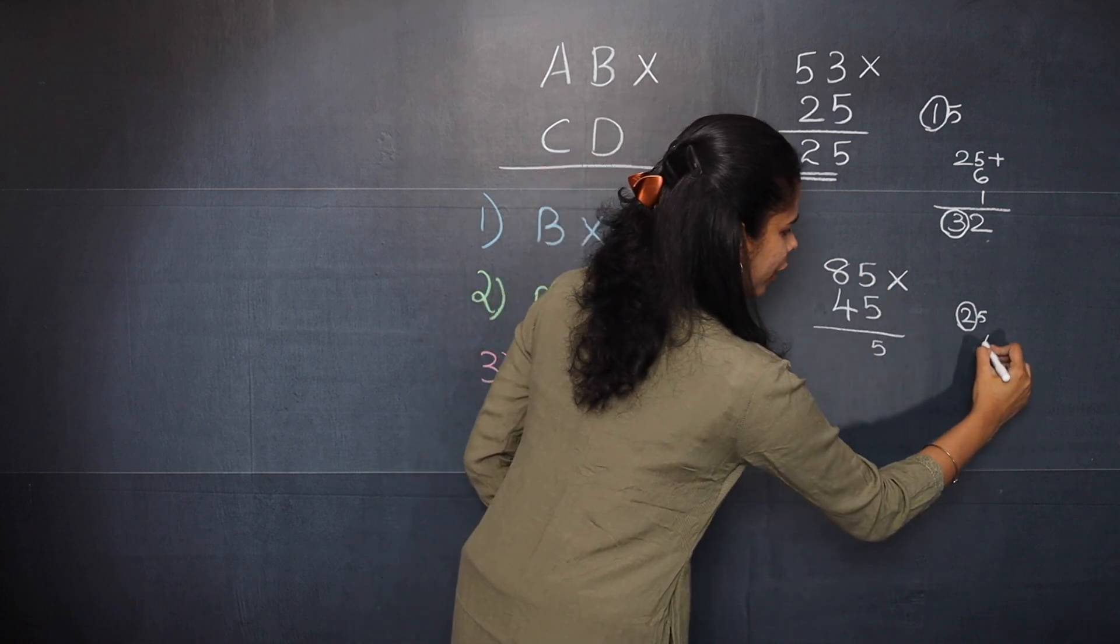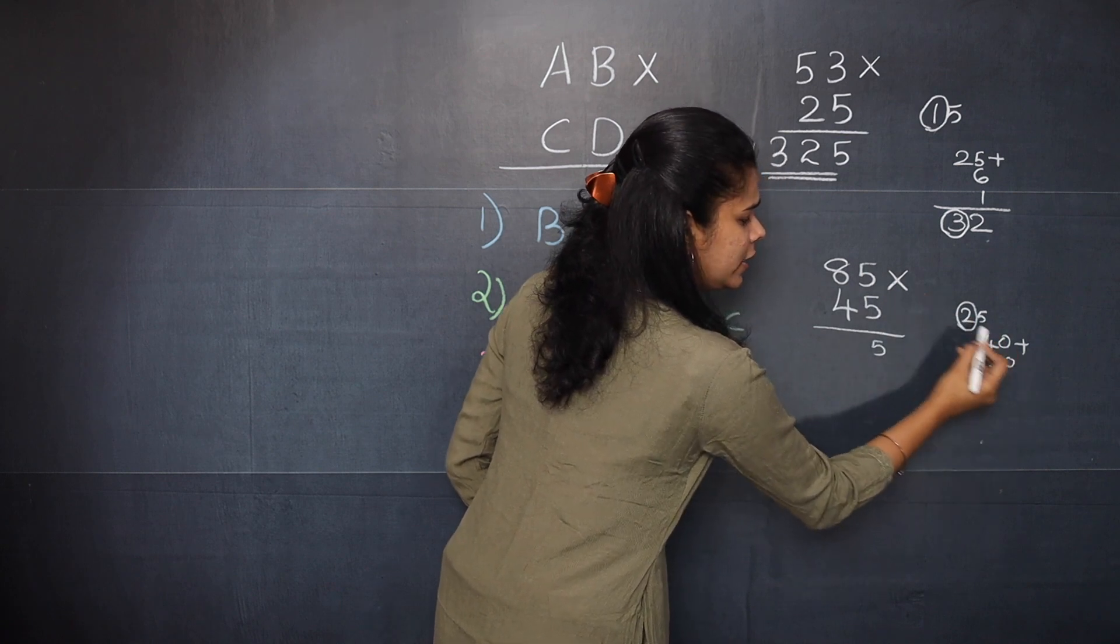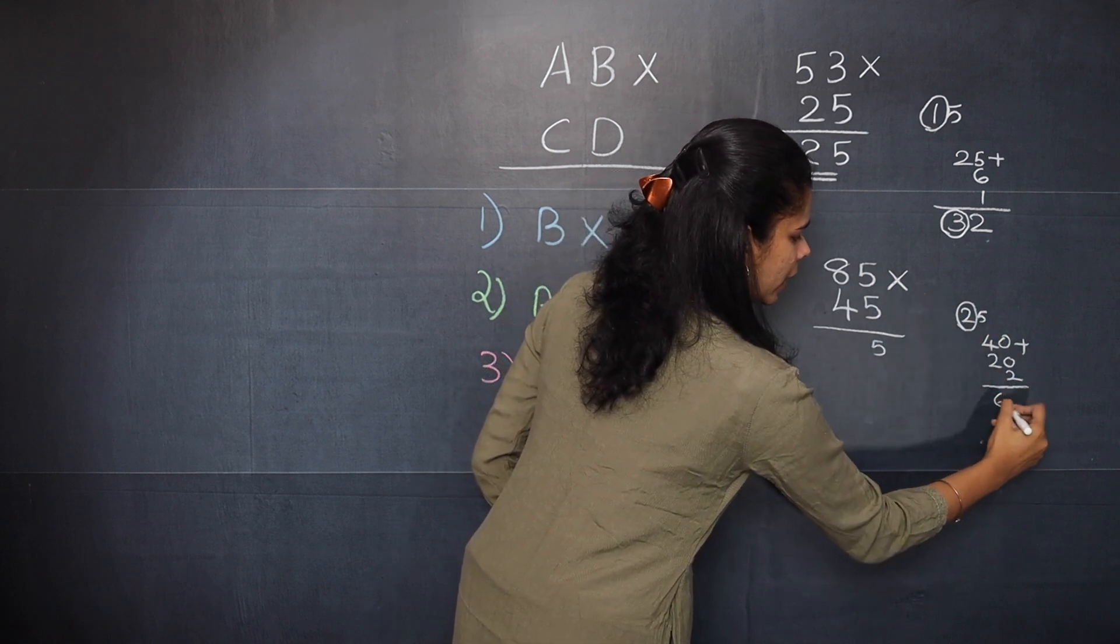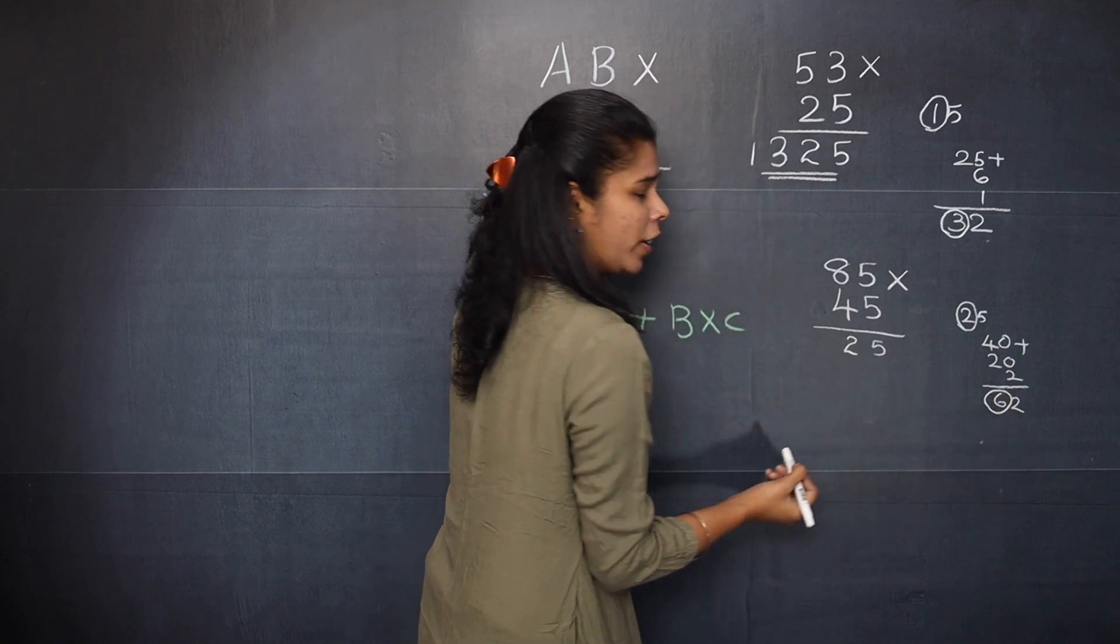Now 8 into 5, 40. Plus 4 into 5, 20. And this carry over 2. So it becomes 62. So you will write 2 here. And 6 is again the carry over.